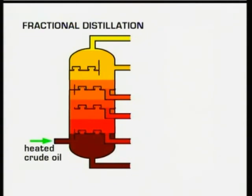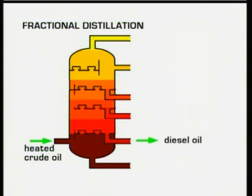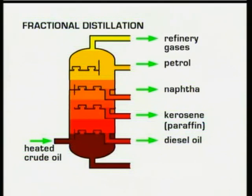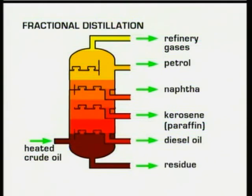Starting at the bottom, where it's hottest, the heaviest fraction with the most carbon atoms and the highest boiling points condenses first. That's diesel oil, used as fuel in diesel engines and in the manufacture of other chemicals. Next up is kerosene or paraffin, used in jet fuel or for heating, and in the manufacture of detergents. Next, naphtha, used to produce plastics. Then petrol, used in cars. And finally at the top, where it's coolest, the refinery gases come off, including the alkanes, like methane and propane, to be used as fuel. The residue left at the bottom goes to make lubricating oil, grease and bitumen for road surfaces, roofing and waterproofing.